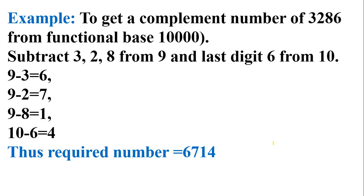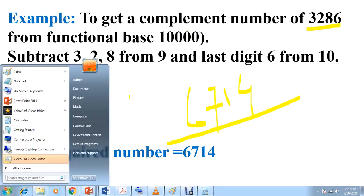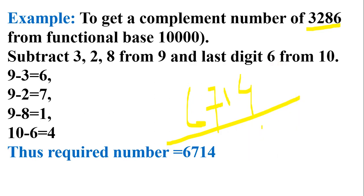Let's take one more example. To get the complement number of 3,286 with base 10,000. Once again you subtract the first 3 digits from 9 and the last one from 10. So: 9 minus 3 is 6, 9 minus 2 is 7, 9 minus 8 is 1, and 10 minus 6 is 4. So 6, 7, 1, 4 is the complement number of 3,286 to make 10,000. You can verify: 3,286 plus 6,714 equals 10,000. Yes, it is correct.